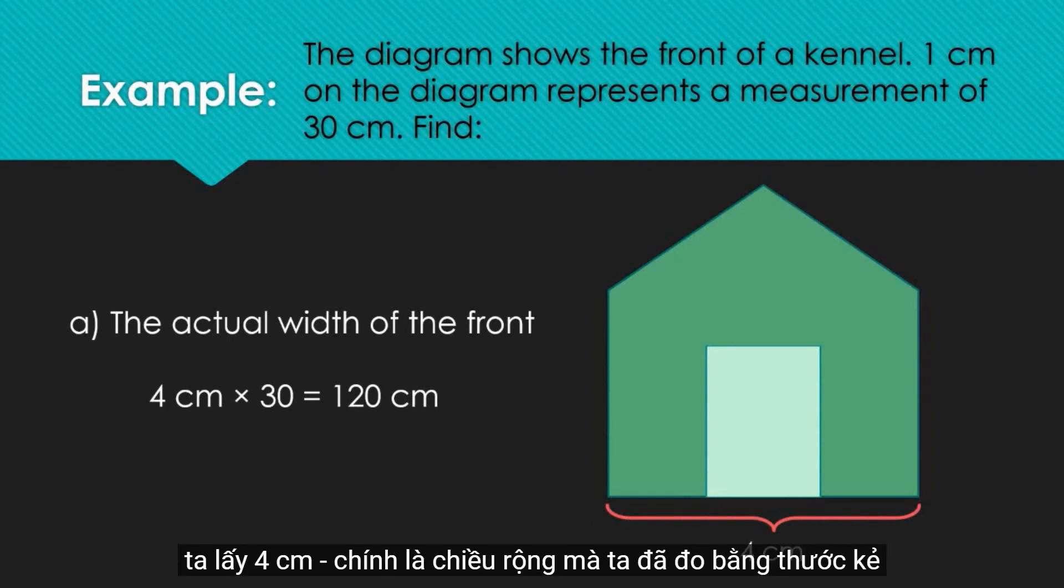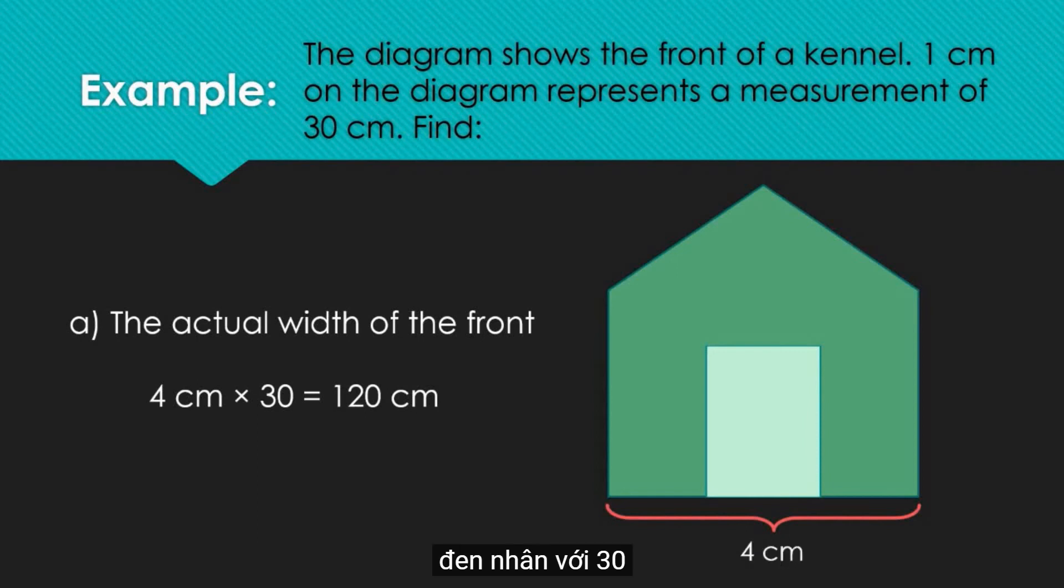You take 4cm, which is the width of the kennel that you have measured with your ruler. You times 30cm and the answer you will have is 120cm.